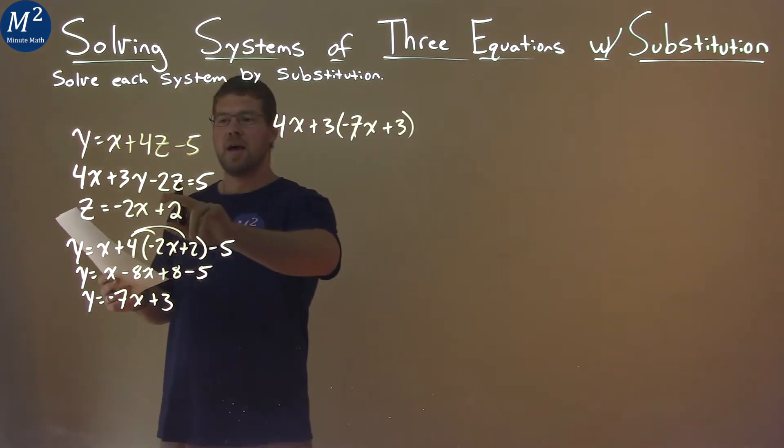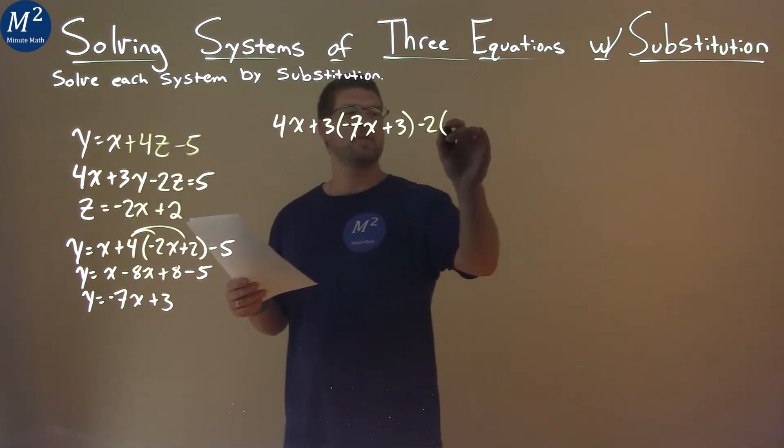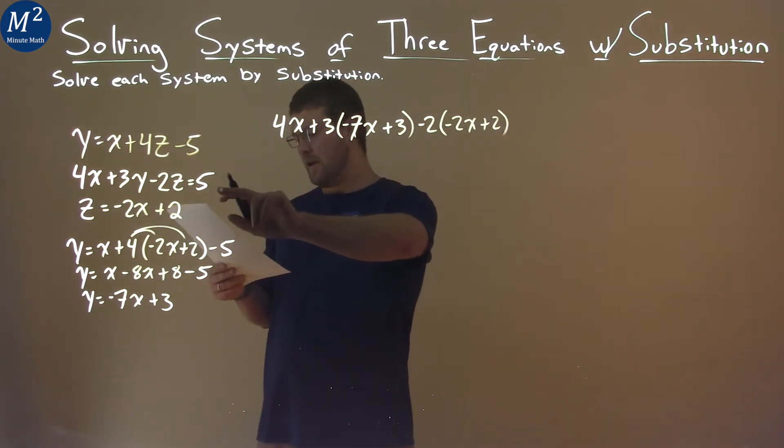And then we have minus 2 times z, which is -2x + 2. And that's equal to 5.